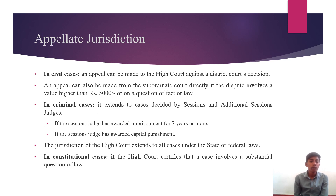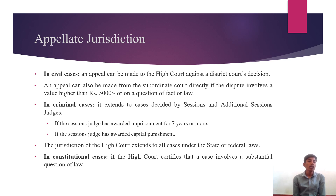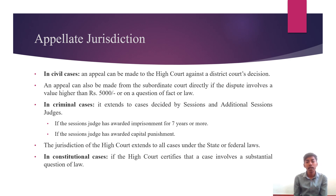Appellate Jurisdiction: In civil cases, an appeal can be made to the High Court against the district court decision. An appeal can also be made from the subordinate courts directly if the dispute involves a value higher than Rs. 5,000 or on a question of fact or law. In criminal cases, it extends to cases decided by session and additional session judges, if the session judge has awarded imprisonment for seven years or more, or if the session judge has awarded capital punishment. The jurisdiction of the High Court extends to all cases under state or federal laws.